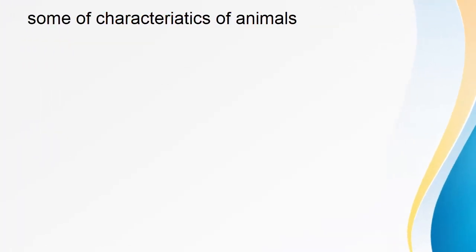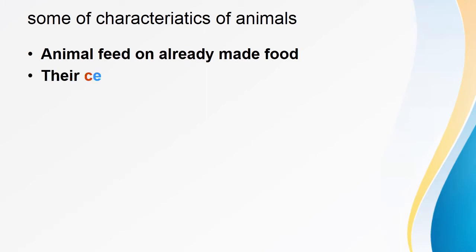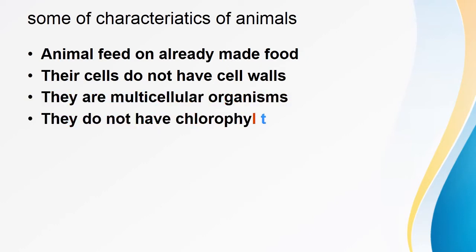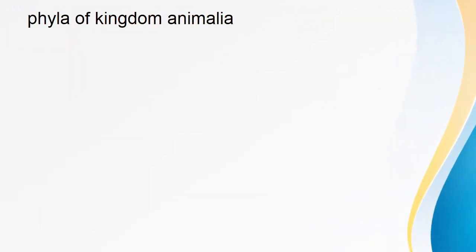Characteristics of animals: animals feed on already made food — they cannot make their own food. Their cells do not have cell walls. They are multicellular organisms. They do not have chlorophyll, so they cannot make their own food.